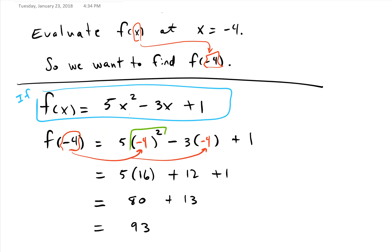Negative 4 squared gives us 16, negative 3 times negative 4 gives us 12, and then we just carry the one down.